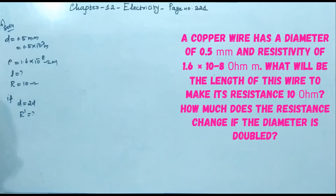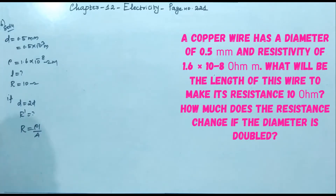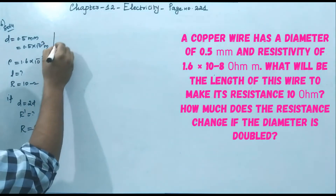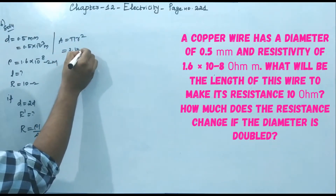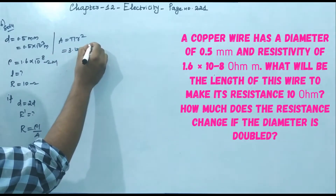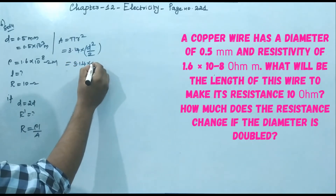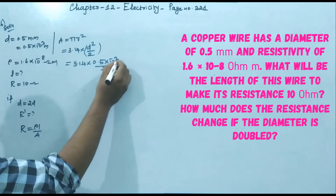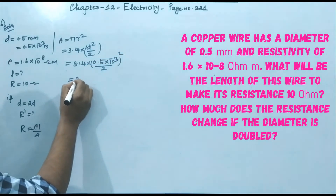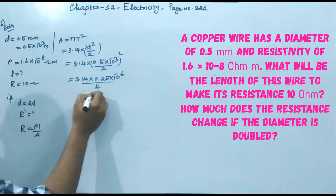We use the formula R = ρL/A. Area is not directly given, but diameter is, so A = πr² = π(d/2)². Substituting d = 0.5 × 10⁻³ m, the area becomes 3.14 × 0.25 × 10⁻⁶ divided by 4.